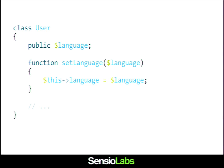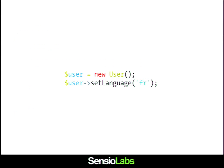To make things clear, I'm going to talk about this user class. When you are managing a web application, you need a user at some point. A user is something you can implement to store user preferences, like its language, for instance. Using this user class is pretty easy — you create a user and you set a language.